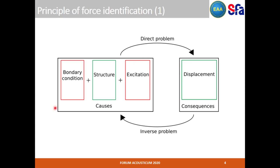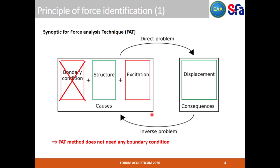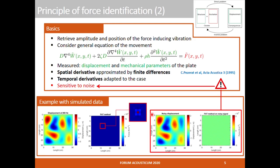In a direct problem, the displacement field of the structure is generally a solution and can be computed with prior information on the structure, excitation conditions, and boundary conditions. In the case of an inverse problem, the displacement is known from measurements and one aims at knowing the force applied to the plate. The inverse resolution, noted here FAT, is a method that can be used without any boundary conditions. The principle of the inverse problem is therefore to retrieve the excitations that cause the displacement.